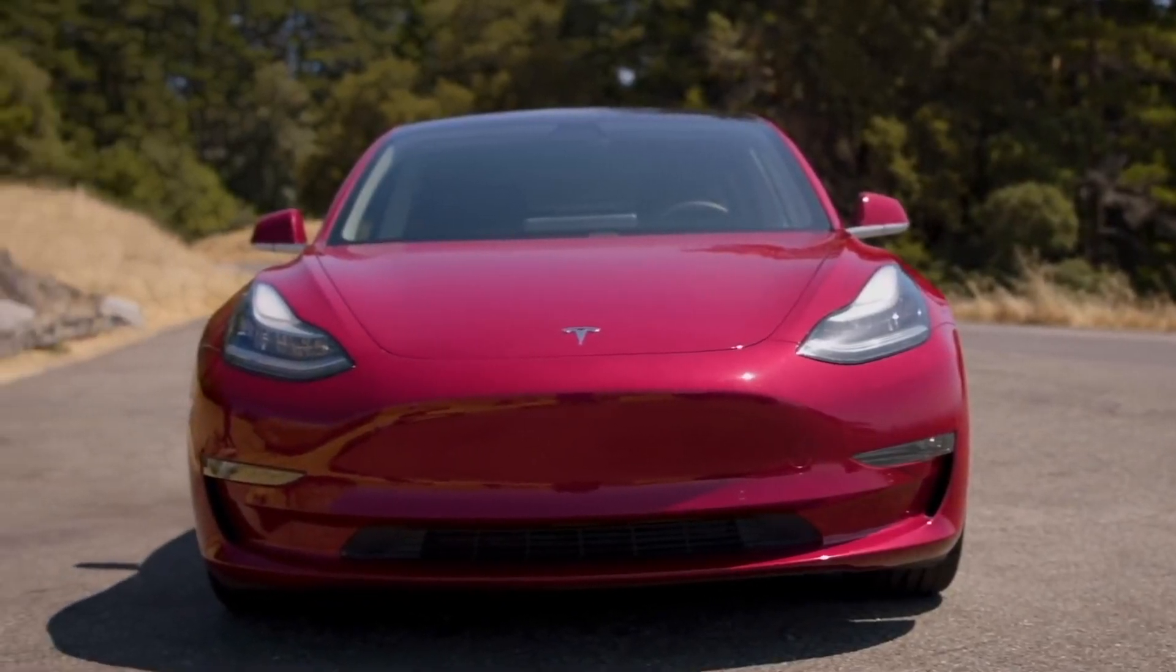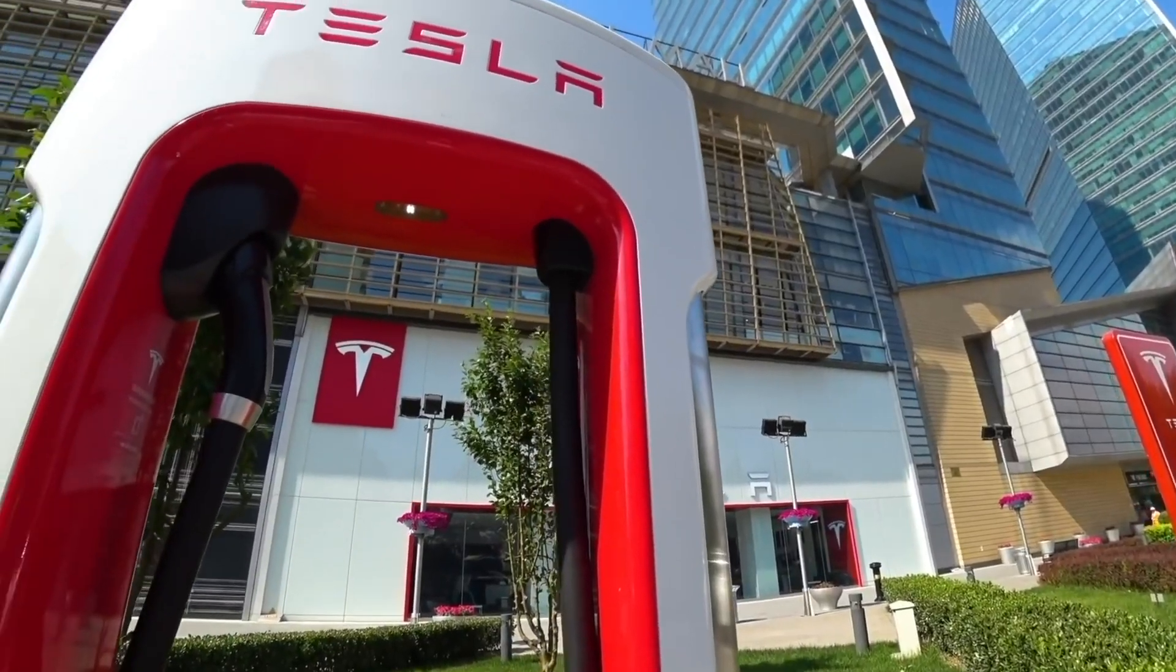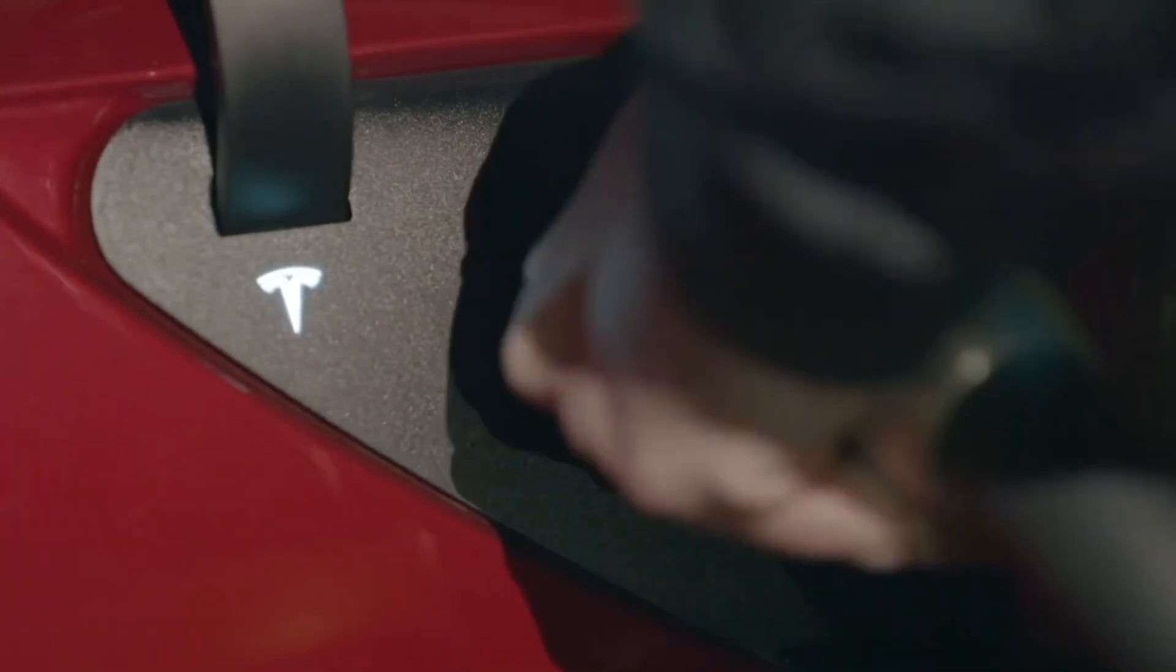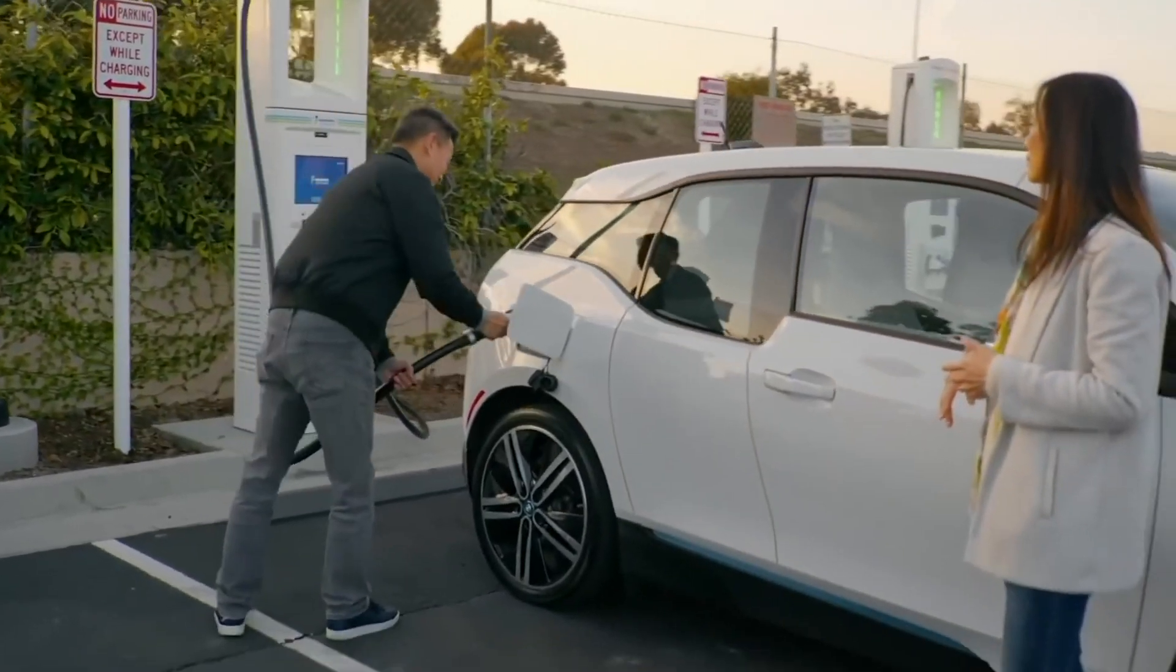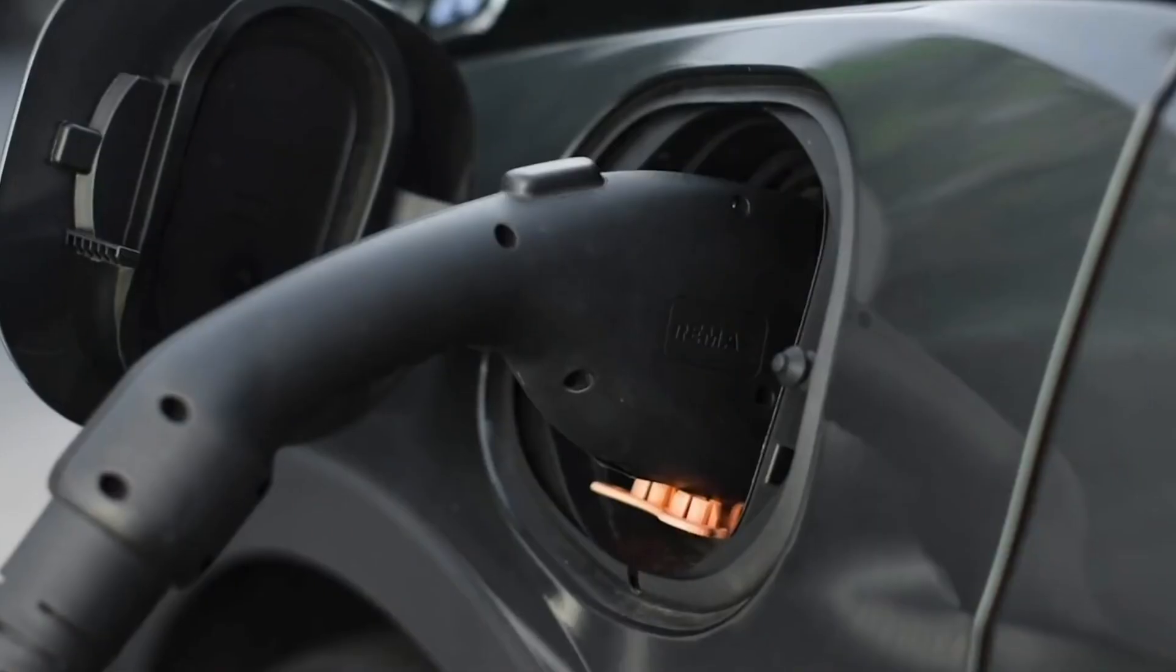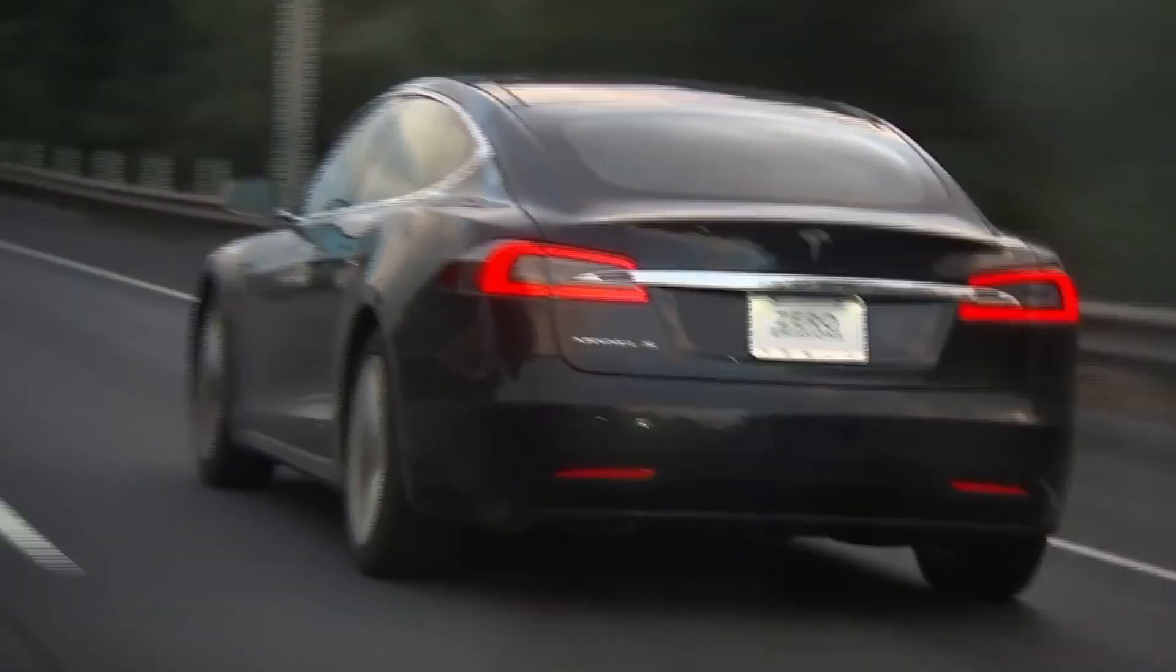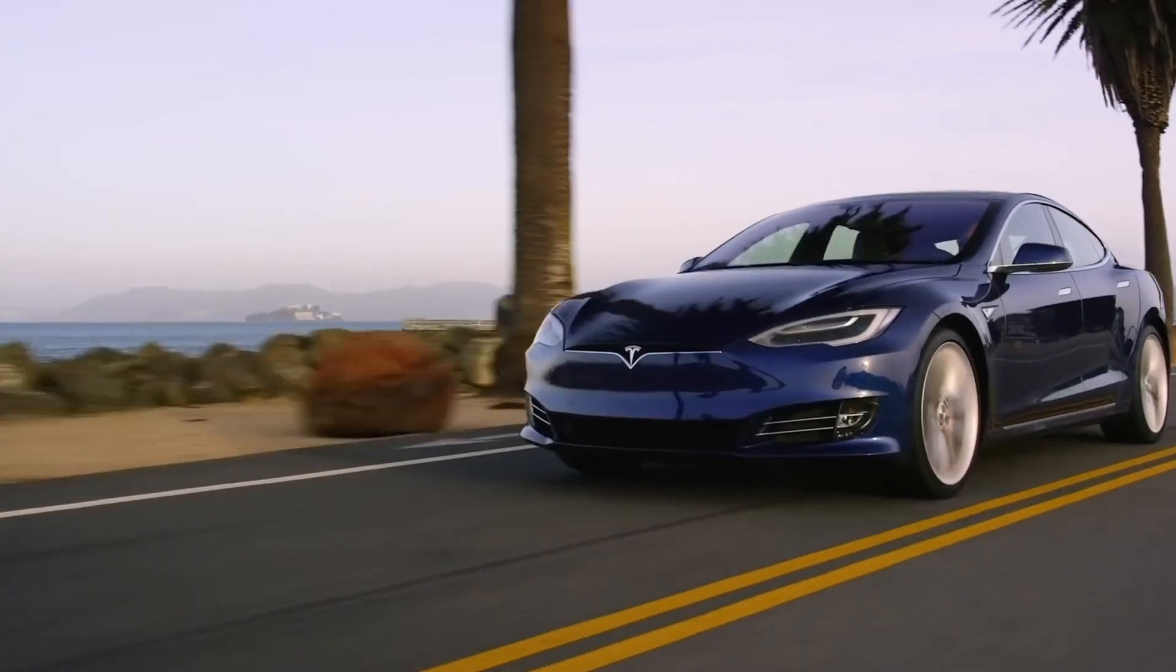The 4680 battery cell was unveiled at Tesla's Battery Day in September 2020. The automaker presented several new pieces of technology that combined together result in a more energy-dense cell that could reduce costs by 50%. One of the most significant improvements that 4680 cells bring to the table is the ability to build a structural battery pack that makes the pack part of the vehicle structure, reducing parts, weight, and cost.